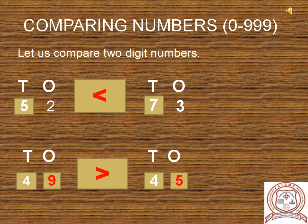Let us compare two-digit numbers. There are two numbers: 52 and 73. While comparing these numbers, first we compare the numbers on tens place. In 52, 5 is on tens place, and in 73, 7 is on tens place. So we will compare 5 tens and 7 tens. 5 tens is less than 7 tens. That means 52 is less than 73.